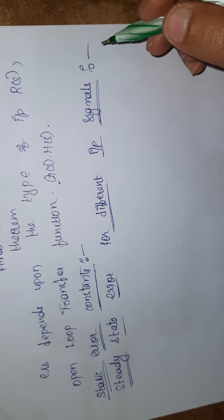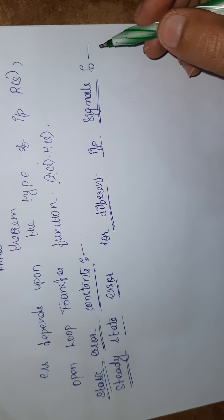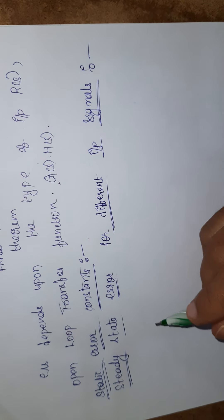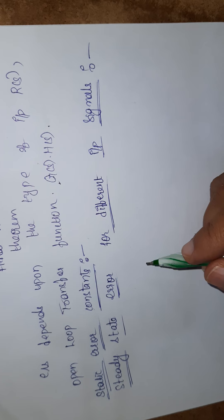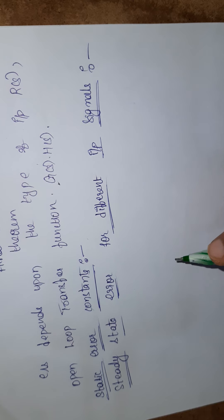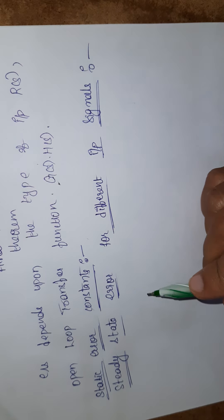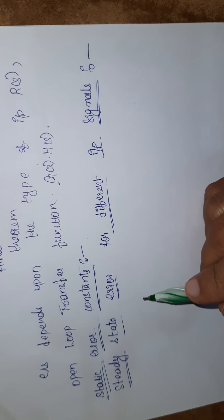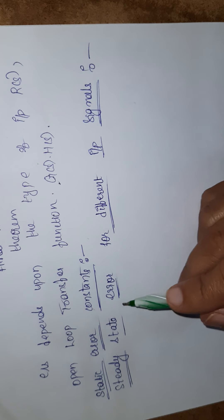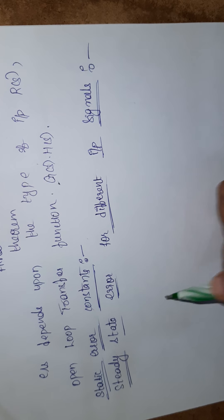Hello. Now I am going to discuss static error constants and steady state error for different inputs — step, ramp, and parabola. If I am applying the step signal, what is the steady state error and what is the static error constant I am getting? And similarly for ramp and parabola.